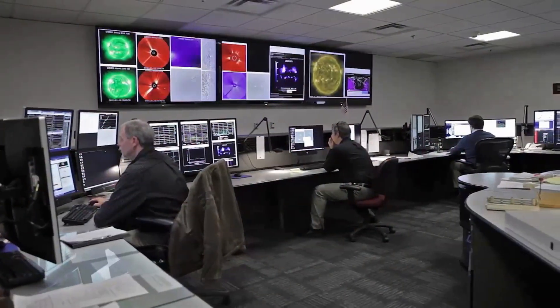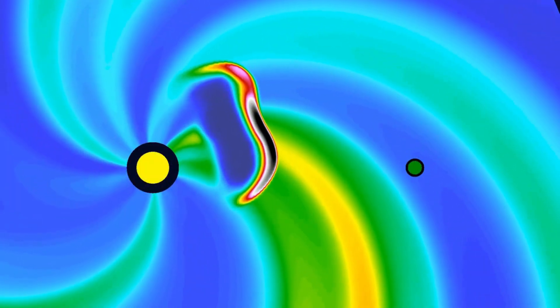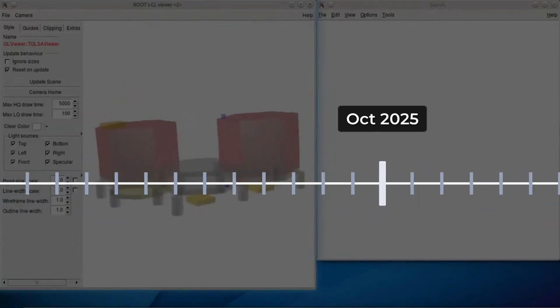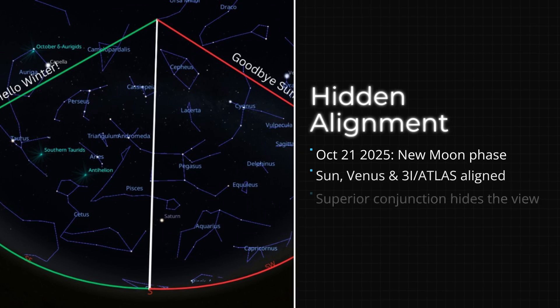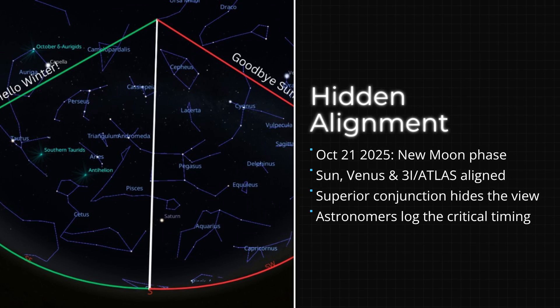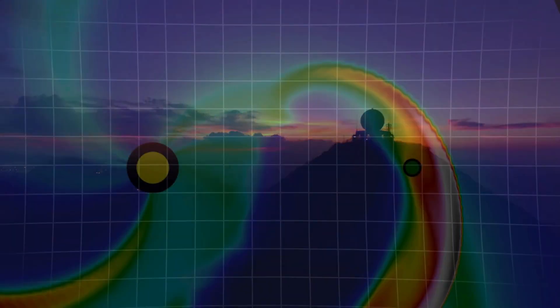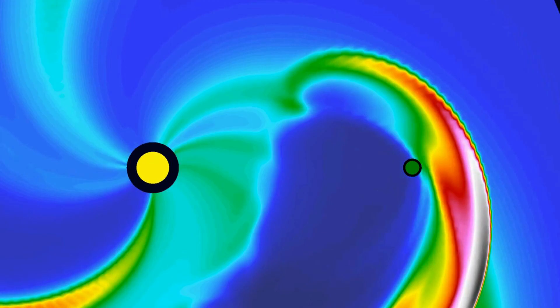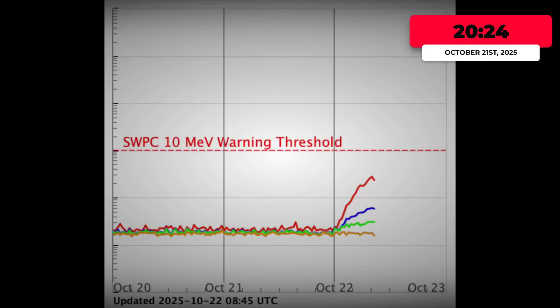For planetary scientists and heliophysicists, this is a collision course hidden in plain sight—one that can only be reconstructed through indirect evidence, modeling, and the delayed arrival of energetic particles. On the ground, astronomers mark the date—October 21st, New Moon, Superior Conjunction. They know that in the darkness behind the Sun, an interstellar object is about to be struck by the full force of a solar eruption, and the only clues will arrive in the data, hours or days later, filtered through the Sun's relentless glare.